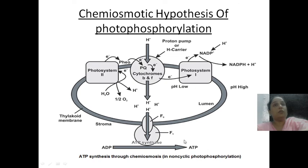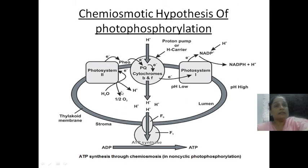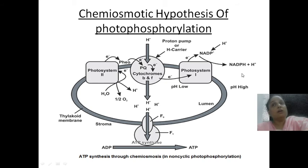Now, the hydrogen ions that were released inside the lumen increase the concentration there. These hydrogen ions then move outside into the stroma. From the stroma, this hydrogen ion is going to be supplied to NADP.